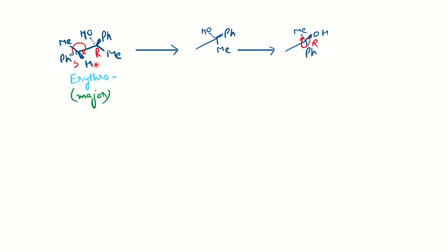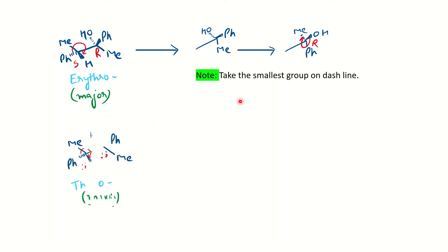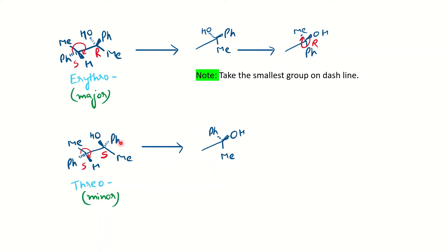The minor product: S remains the same because it is given in the starting material. We designed the other stereocenter, so obviously if the erythro is R here, it has to be S for the threo. For the minor product, the Ph is written on your left-hand side and OH (the front group) on the right-hand side. Front groups are on the right-hand side and the back group on the left-hand side.